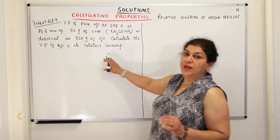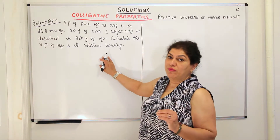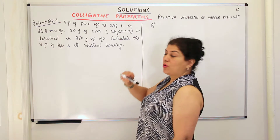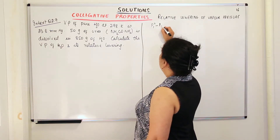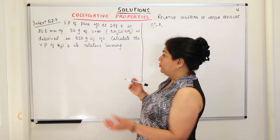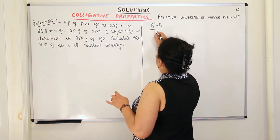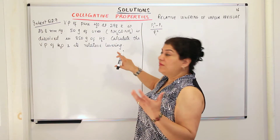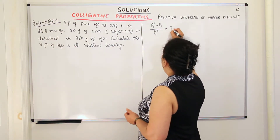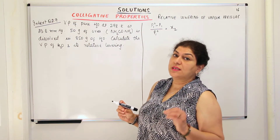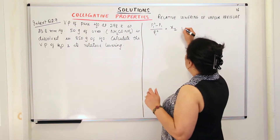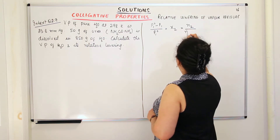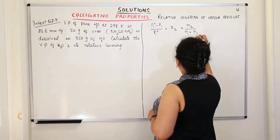According to Raoult's law for relative lowering of vapor pressure, the formula is: P1° minus P1, divided by P1°, gives you the relative lowering of vapor pressure. This is equal to x2, the mole fraction of the solute. x2 can be written as the number of moles of component 2 divided by the number of moles of component 1 plus the number of moles of component 2.